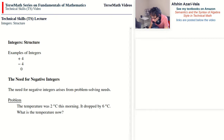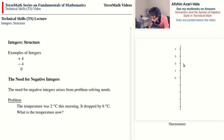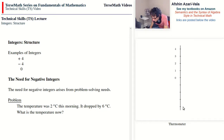An example of this problem is: the temperature was 2 degrees Celsius this morning, it dropped by 6 degrees Celsius — what is the temperature now? We can visualize this on the right side. Imagine this is our thermometer: the temperature was 2 degrees Celsius this morning, so the top of the mercury column was at the 2. Then it dropped by 6 degrees, going down 1, 2, 3, 4, 5, 6.